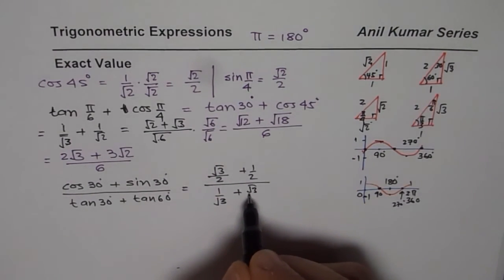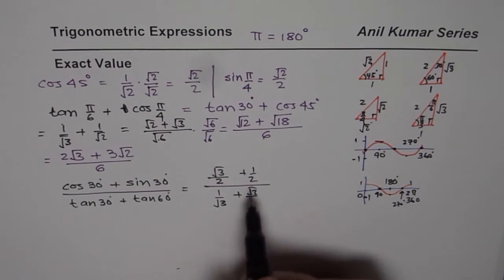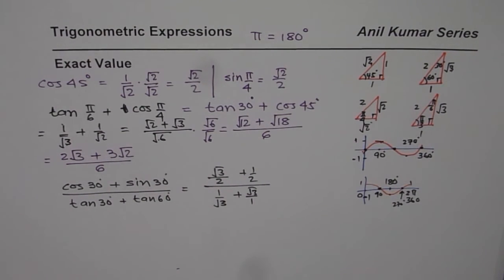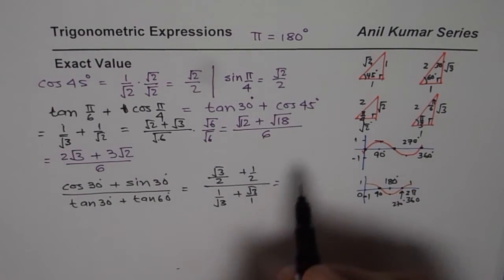Sine of 30 means opposite over hypotenuse plus half. Divided by tan of 30 degrees. Tan is 1 over square root 3. 60 degrees. It is square root 3 over 1. So, we have square root 3. Now, we get this kind of complicated fraction. You need to simplify it.